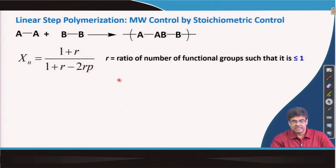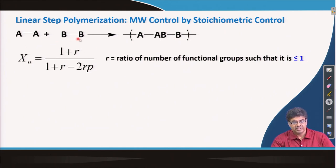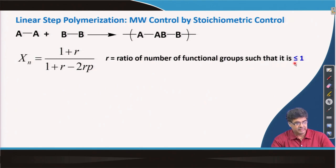Next, we discussed how we can control the molecular weight by controlling the stoichiometry of the functional groups. We took AA and BB type monomers and showed that the degree of polymerization is related to conversion and R, which is the ratio of the functional groups, such that R is always less than or equal to 1.